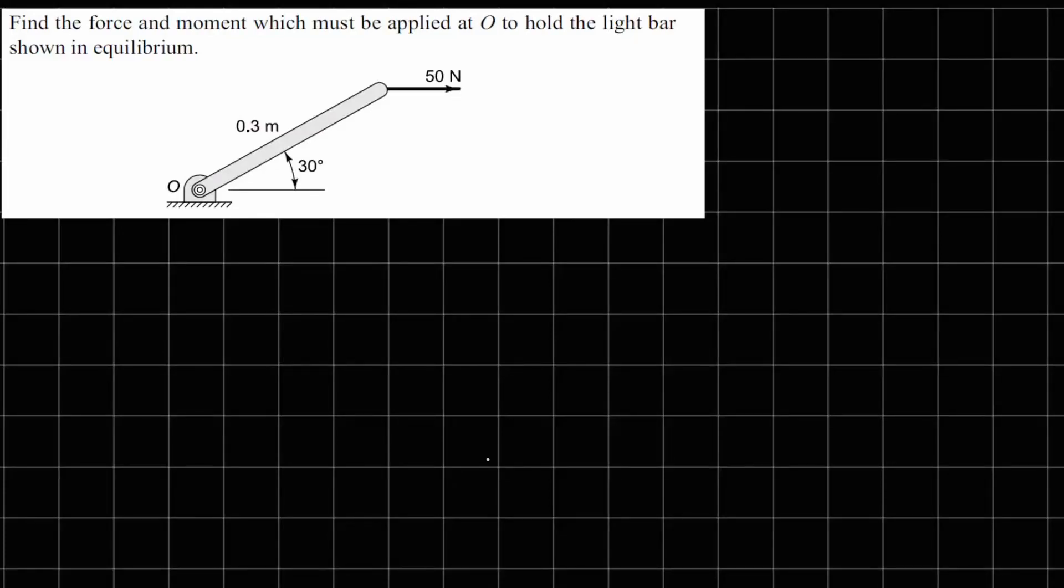This is problem 1.6. It says find the force and moment which must be applied at O to hold the light bar shown in equilibrium. Now this light bar O is bolted at point O, so when we draw the FBD we are going to have reaction forces.